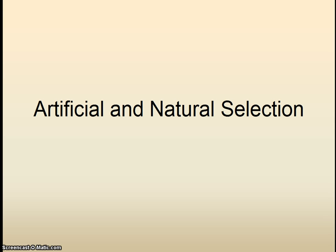Hello, everyone. Today we're going to be learning about artificial and natural selection. These are some ideas that are central to Darwin's ideas of evolution. In the Level 2 book, this is Section 15-3. In the Honors book, this section is a little different, but the concepts are the same. So here we go.